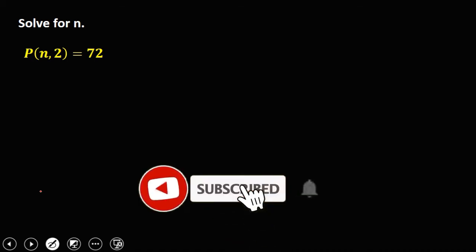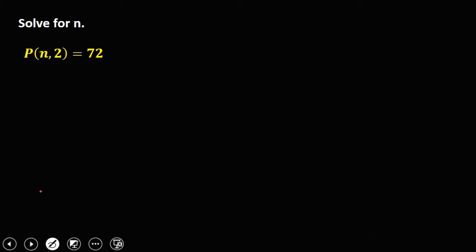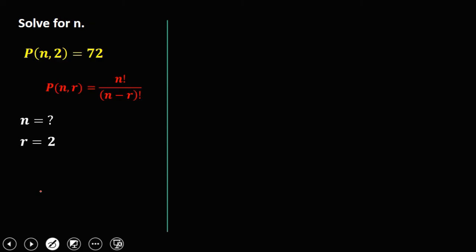Let's solve this problem: solving for n in permutation. We have the permutation of n taking 2, that equals 72. From this formula, n is the unknown and r is equal to 2. To solve for n, since the given is equal to 72, we write: 72 is equal to n factorial over n minus 2 factorial.